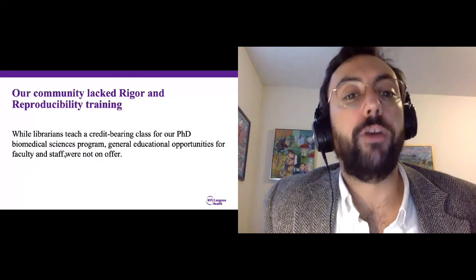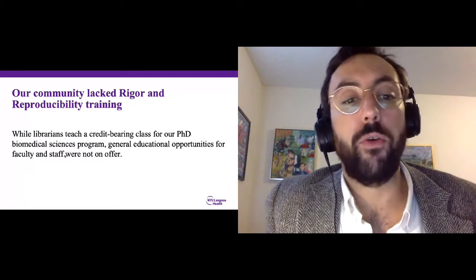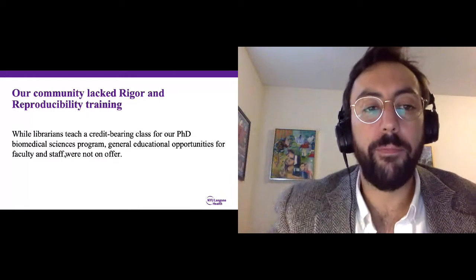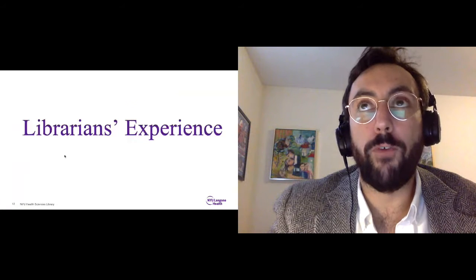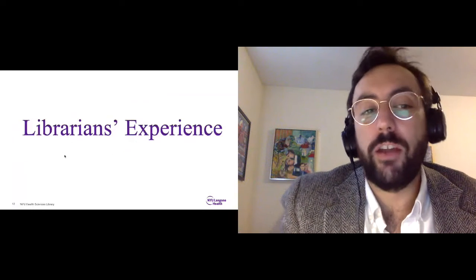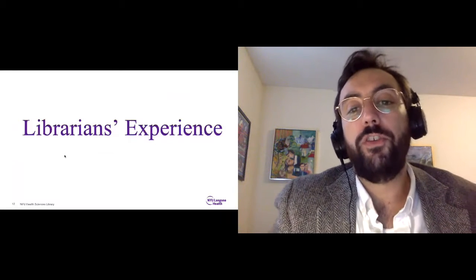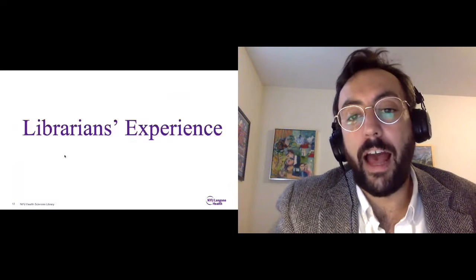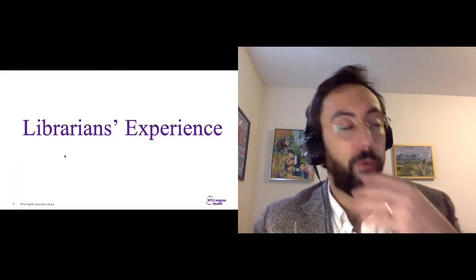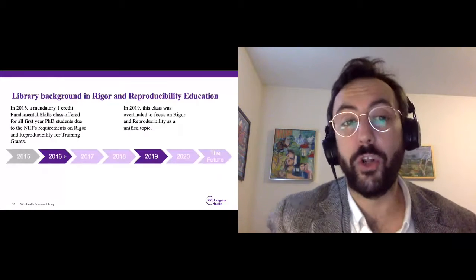We've provided training on rigor and reproducibility in that context, but we have not had or provided opportunities for the general faculty or staff. Neither the library nor the institution at large had offered this to the whole community. Seeing that gap, we felt it might make sense to provide that training. In the past two years, we really overhauled the class to be very focused exclusively on rigor and reproducibility — a one-credit class for about eight sessions and a final exam.